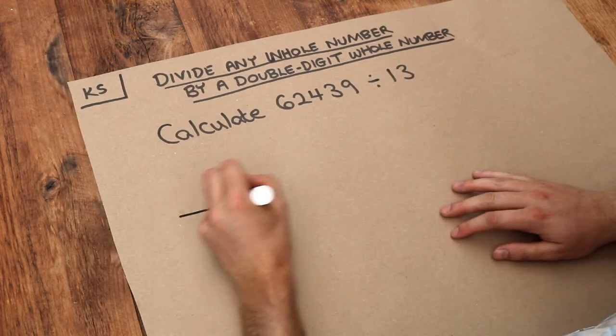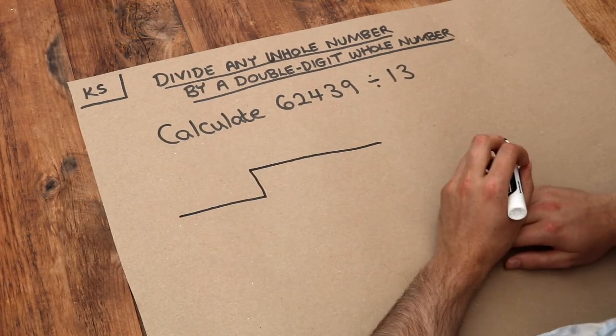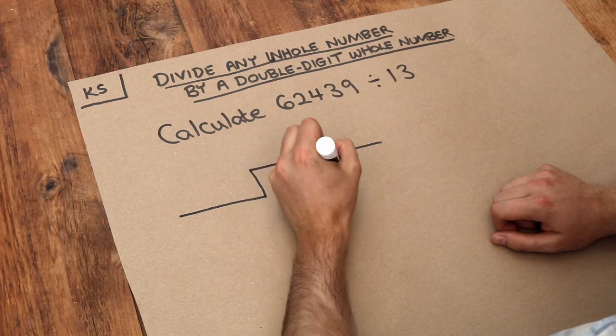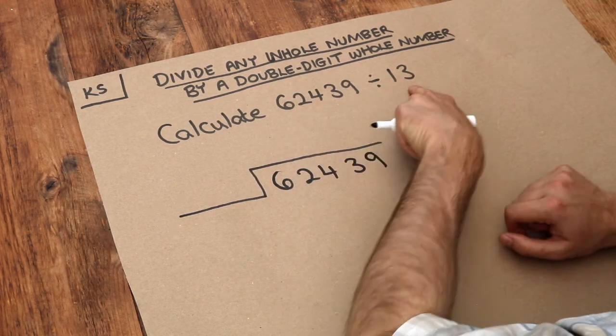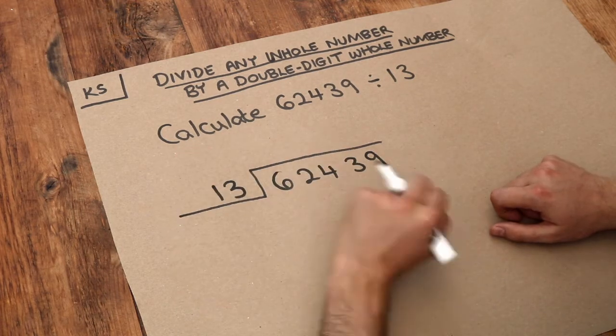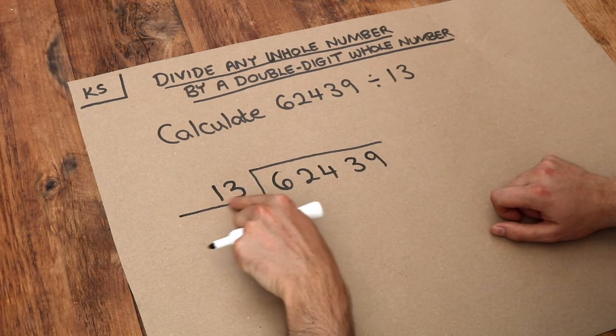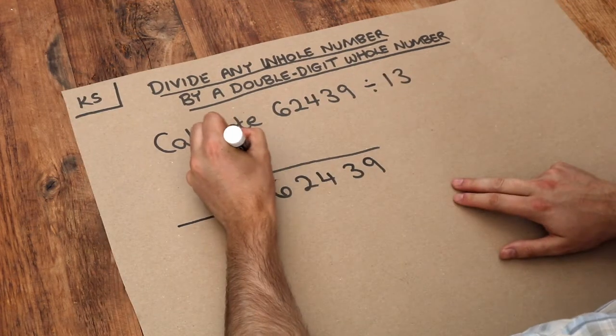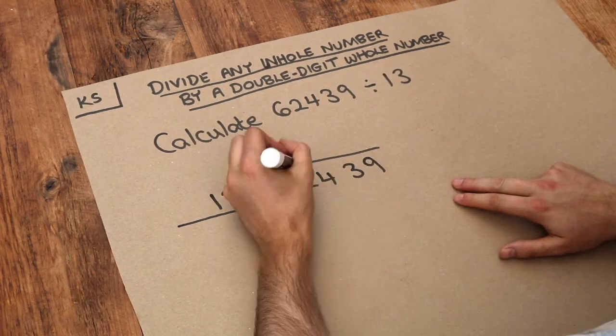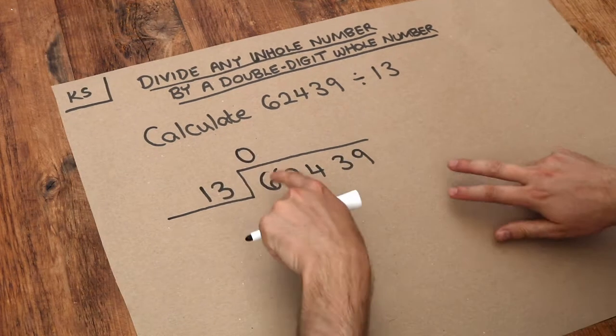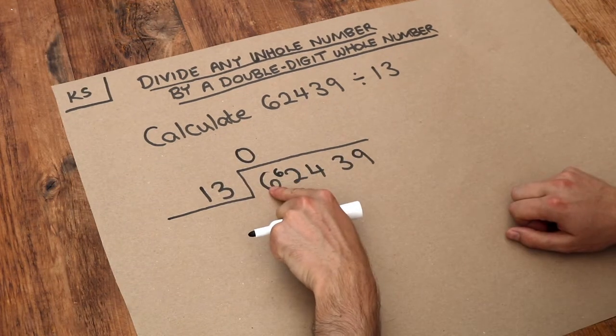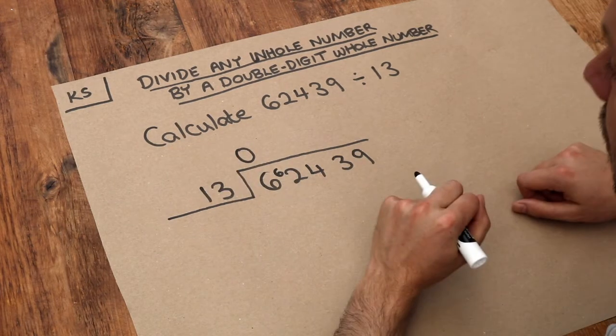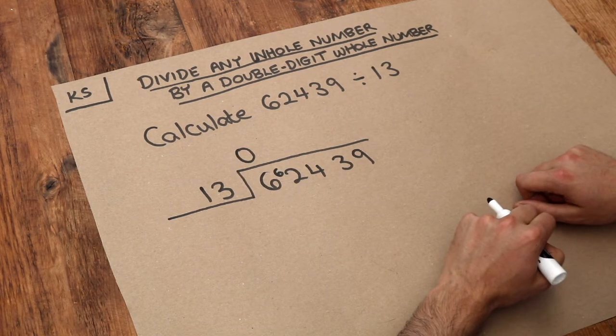So we'd start with the usual thing. We would try and do the bus stop method. Remember we put the left number on the right and the right number on the left. And we'd start by saying how many times does 13 go into 6? Well it doesn't go in any time so 0 whole times but we still have that 6 left over. I explain this with sweets. If I had 6 sweets and I divided it between 13 people each person gets no sweets but we still have the 6 sweets left in our hand.